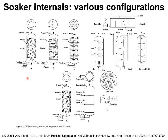We have a doughnut type of construction for the internals here, where we have essentially co-current upflow of vapor and liquid. We could have another construction with perforations on the plate that are asymmetrical — for example, this area is perforated, this area is perforated, but these areas are not perforated — allowing a circuitous path for the vapor-liquid streams.